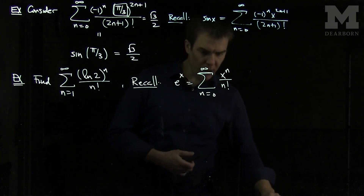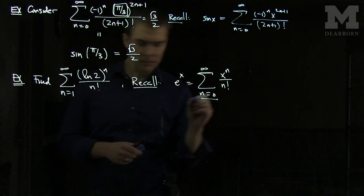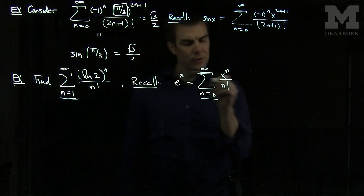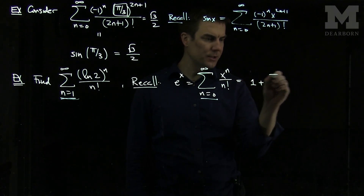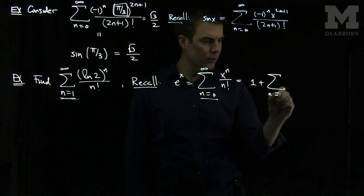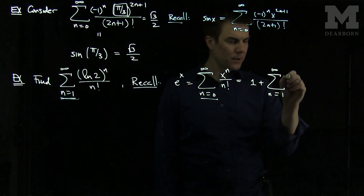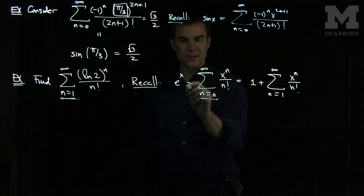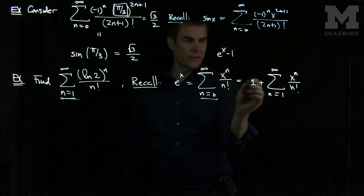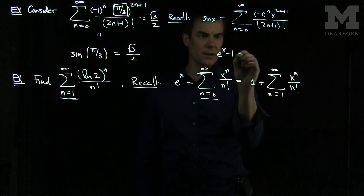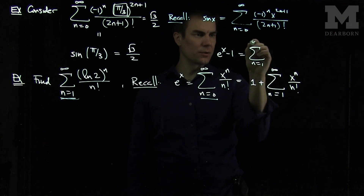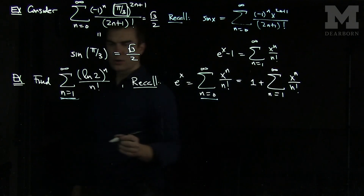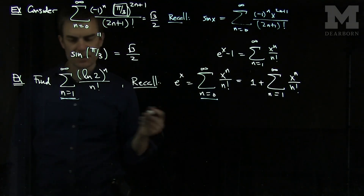The difference between our sum and the exponential sum is that the exponential sum starts at 0. We can write this as 1 plus the sum n goes from 1 to infinity, by plugging out the first term, x to the n over n factorial. Therefore, e to the x minus 1 is the sum n goes from 1 to infinity of x to the n over n factorial. So we have the Taylor expansion for e to the x minus 1.